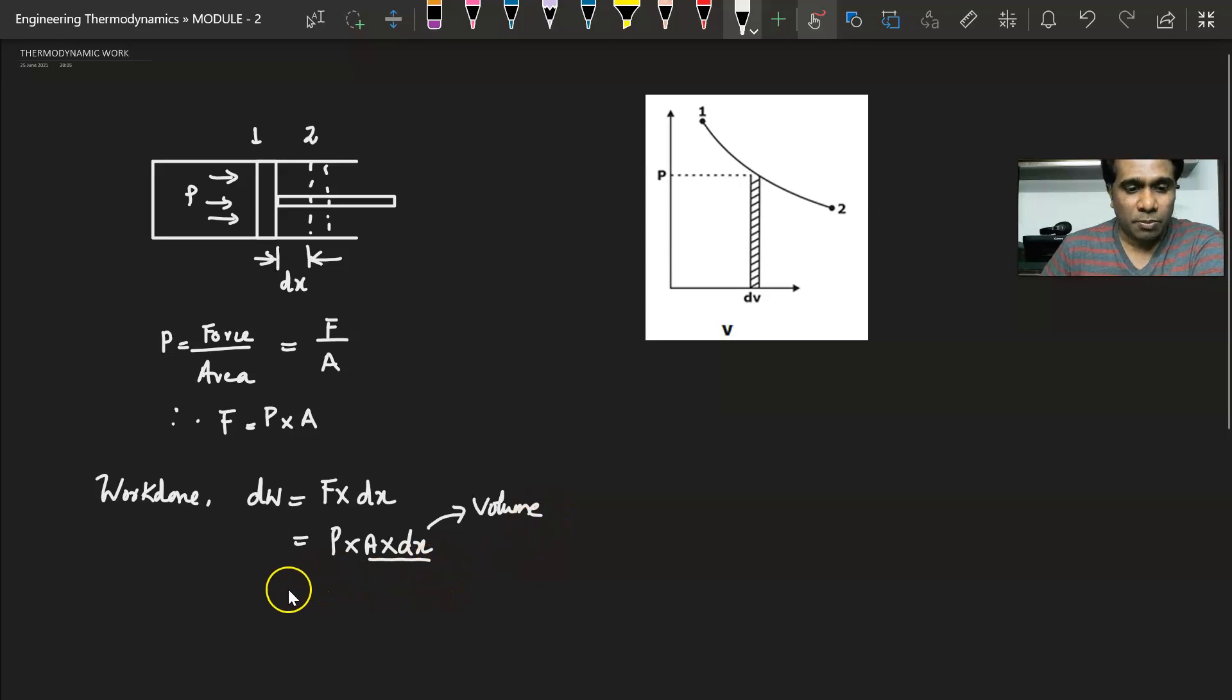So the work done W is equal to integral from 1 to 2 of P dV. Now this is a very important equation that we will be using for finding the work done by a system or on a system.